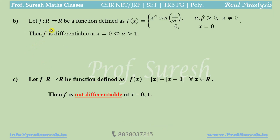Example 2: f from ℝ to ℝ defined as f(x) = x^α · sin(1/x^β) where α, β > 0 for x ≠ 0, and f(0) = 0. Then f is differentiable at x = 0 if and only if α > 1. So if α > 1, this function is differentiable at x = 0.